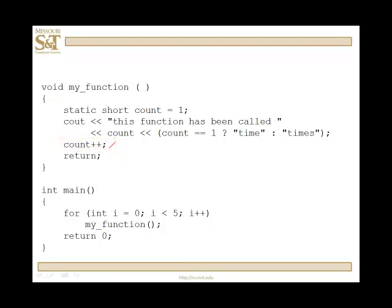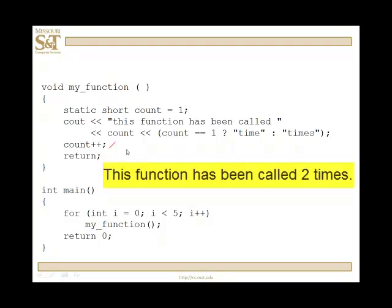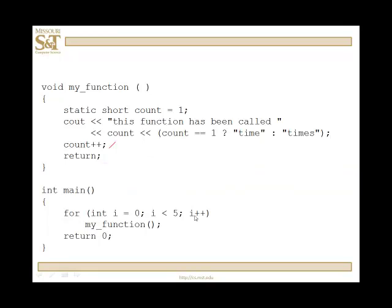So, the second execution of the function will say this function has been called two times. And then the third, it will say this function has been called three times, and then four times, and then five times, etc. In our little main program here, we simply enter a loop, and that's the output of that for loop.